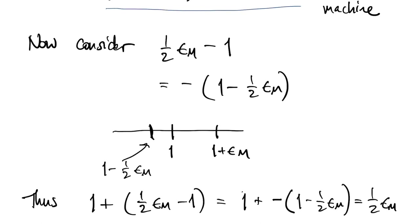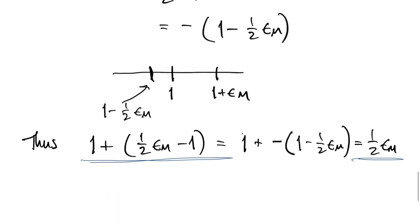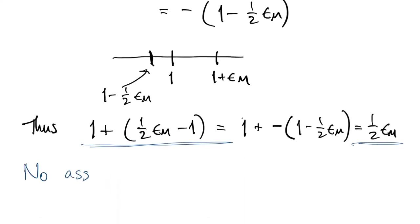And the only difference between these two examples is the order of operations. So in other words, we've broken the associative law of addition. We like the associative law, and so that's kind of a big loss. But as we'll see, it's not that hard to contain the damage.